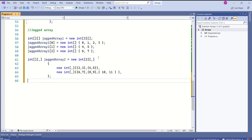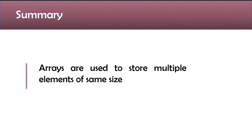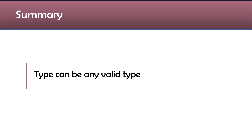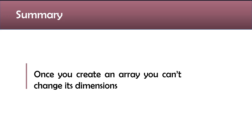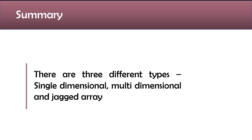To summarize today's discussion: arrays are used to store multiple elements of the same type. The type can be any valid type. An array is a reference type. Importantly, once you create an array, you cannot change its dimensions. Elements are accessed using an index which starts from zero. There are three different types of array: single-dimensional, multi-dimensional, and jagged array, all of which we have seen in our examples.